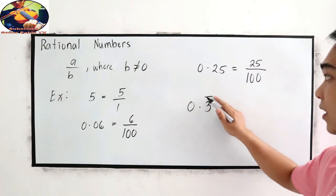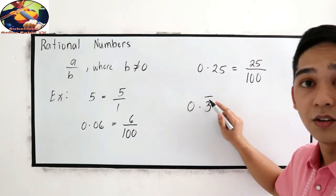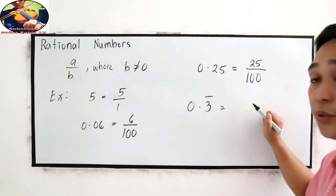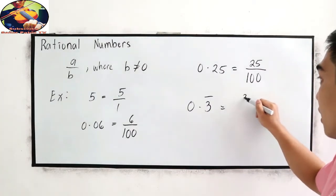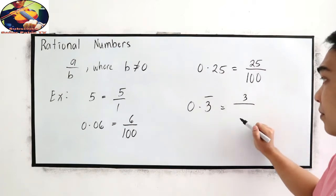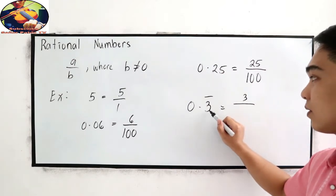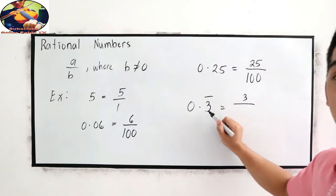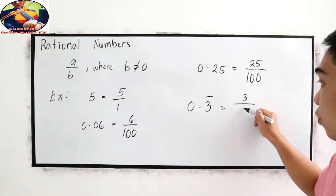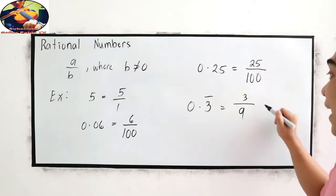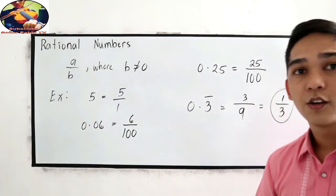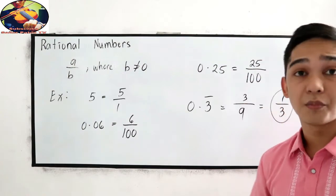We also have 0.3 with a bar sign on top of the 3. This repeating decimal is equivalent to 3 over 9. Since we have one decimal place, instead of writing zeros we write 9. Simplified, that is equal to 1 over 3. This is the introduction of rational numbers.